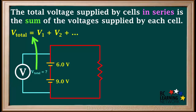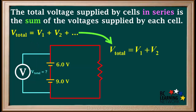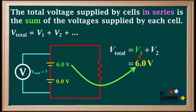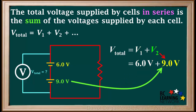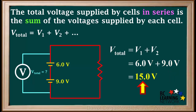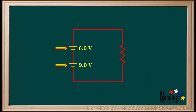To find the total voltage supplied by cells in series, the given equation can also be used. Because we only have two cells, we can say that V_total equals V1 plus V2. We'll call the voltage of the 6-volt cell V1 and the voltage of the 9-volt cell V2. So V_total equals V1 plus V2, or 6 plus 9, which is equal to 15 volts.